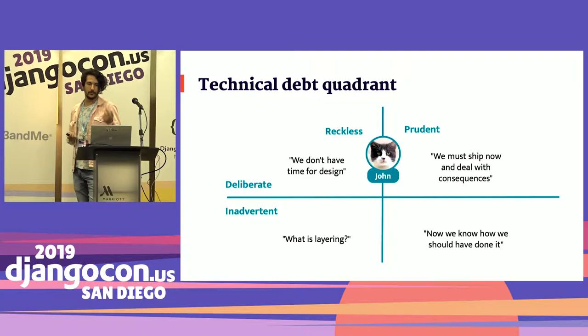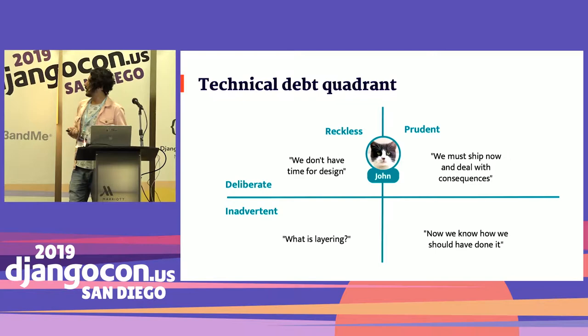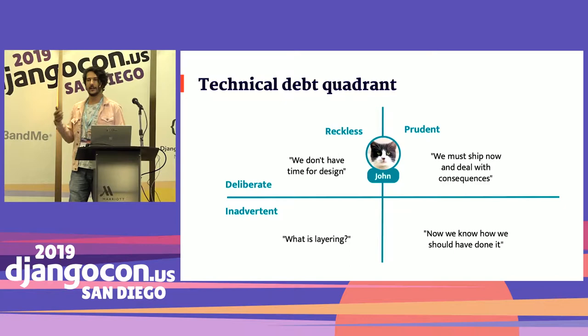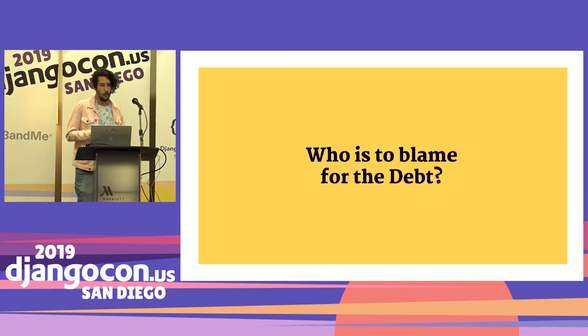If you look at the Martin Fowler technical debt quadrant, which I highly recommend you check out later, we can see easily where John is. He's on the top part of the quadrant — being reckless and prudent — because he knew he didn't have enough time to implement a better solution, but also acknowledged that in the future he would come back and fix it. So he's kind of in the middle.